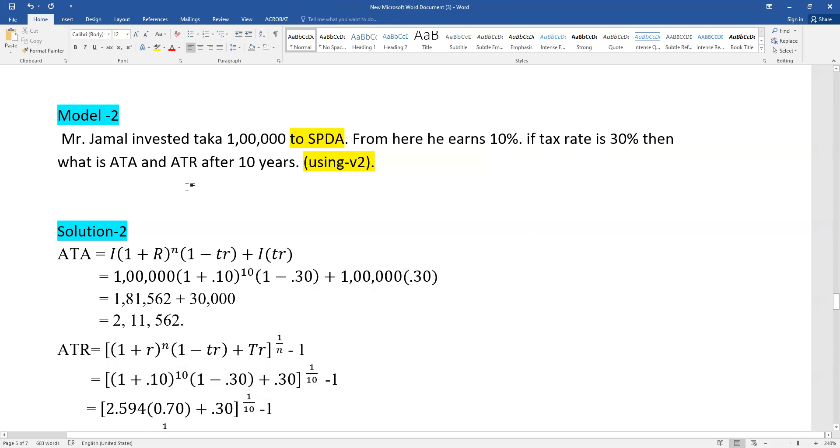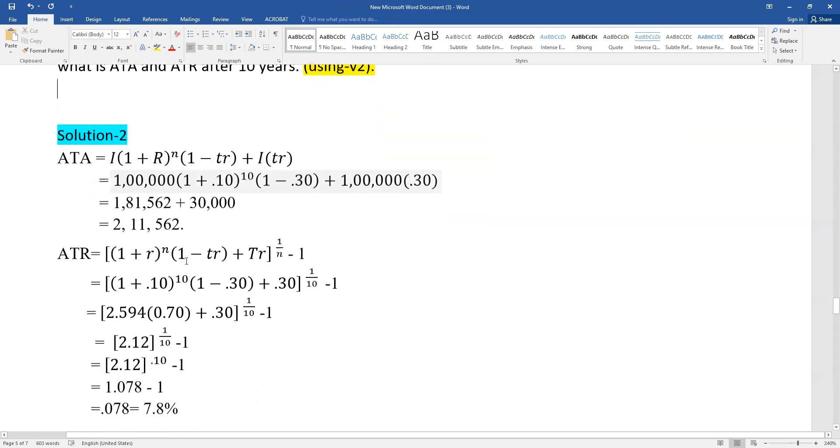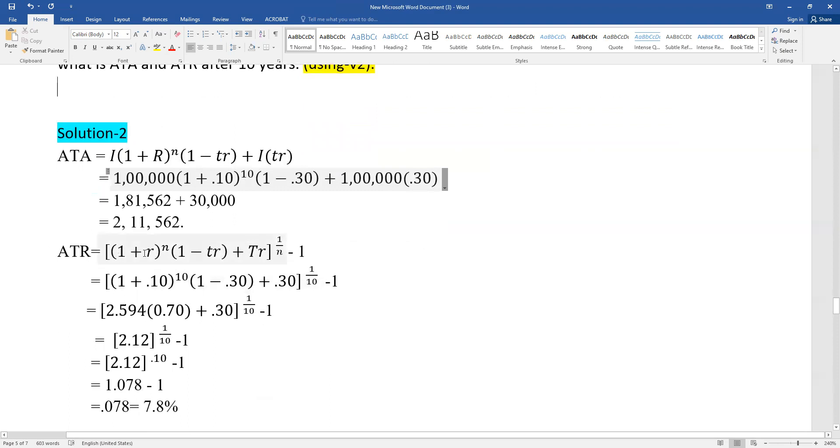For ATR, the formula is: [(1 + r)^n × (1 - TR) + TR]^(1/n) - 1. Substituting: [(1 + 0.10)^10 × (1 - 0.30) + 0.30]^(1/10) - 1. That's [(2.594 × 0.70) + 0.30]^(1/10) - 1, which equals [2.12]^(0.1) - 1.